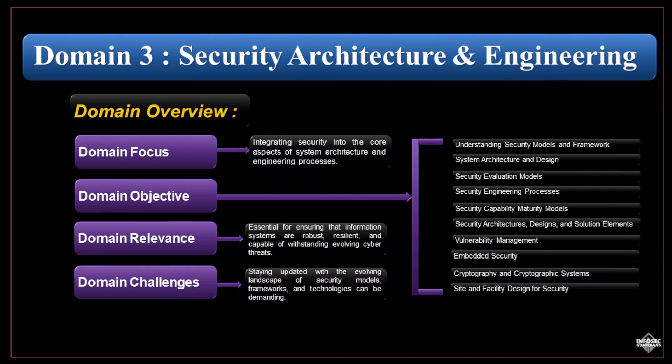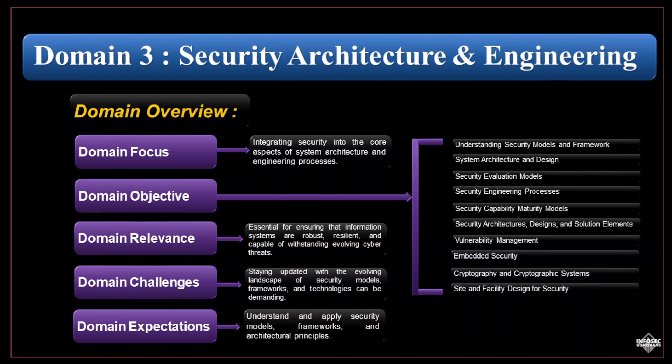Implementing security measures, especially cultural and organizational changes, can be challenging within an organization. CISSP candidates are expected to demonstrate a deep understanding of security models, frameworks, and architectural principles; be proficient in risk assessment, vulnerability management, and security testing; possess extensive knowledge of cryptographic techniques and their practical application; and have the ability to design and maintain secure systems, facilities, and networks. They must also understand how to integrate security practices into the software development lifecycle.